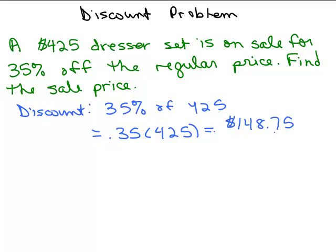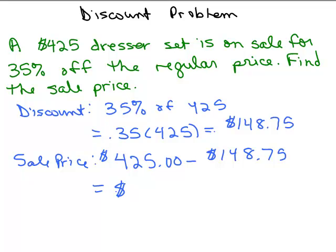So the discount is $148.75, now what it's asking us for is the sale price. So how do you get the sale price? You have to subtract that from the regular price. So the sale price would be the original price of the dresser, $425, minus $148.75, and now you just do that arithmetic. That comes out to $276.25. So that is the sale price for that dresser. It's a pretty good discount, almost $150 off.